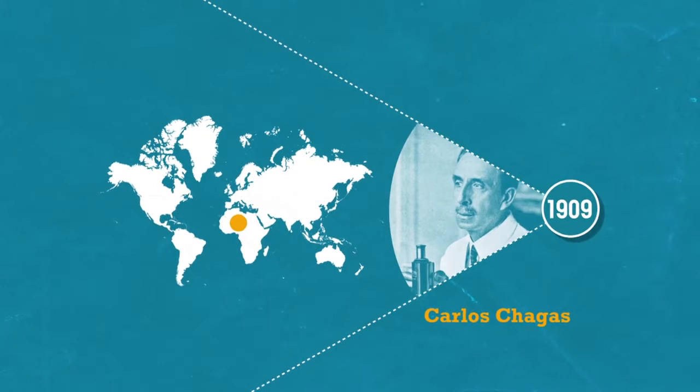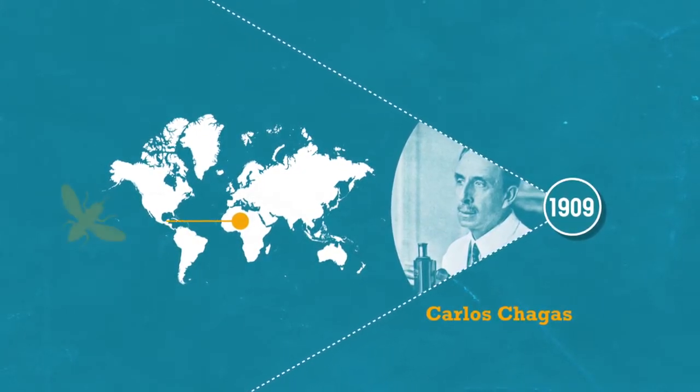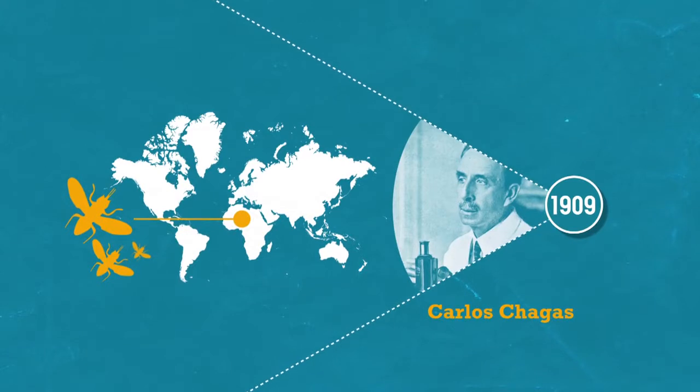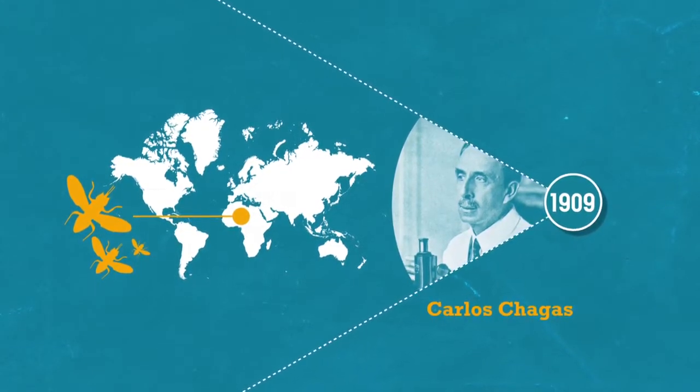Some years earlier, the cause and vector of human African trypanosomiasis, a close relative of Chagas disease, better known as sleeping sickness, had been discovered.